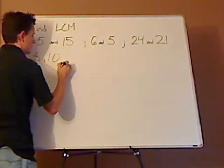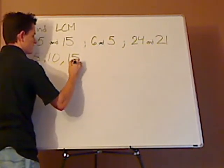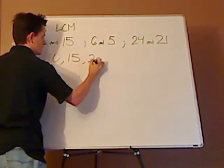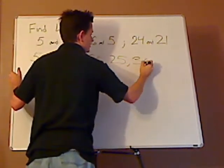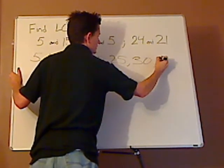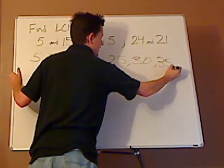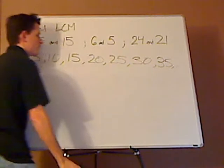5 times 3 is 15, 5 times 4 is 20, 5 times 5 is 25, 5 times 6 is 30, and then 5 times 7 is 35, and it just goes on forever and ever and ever.